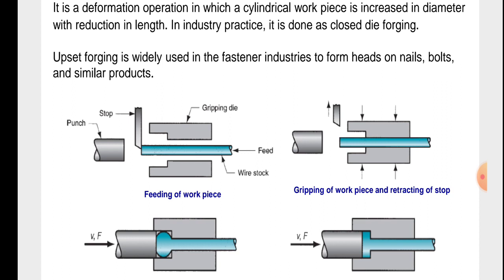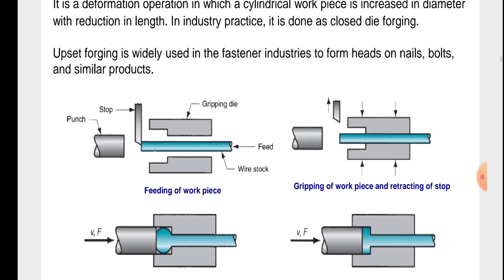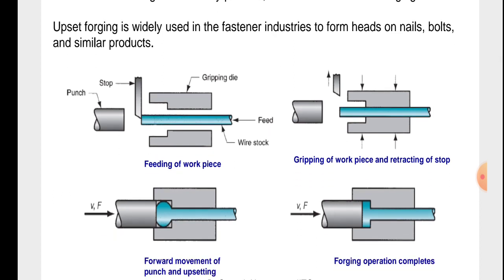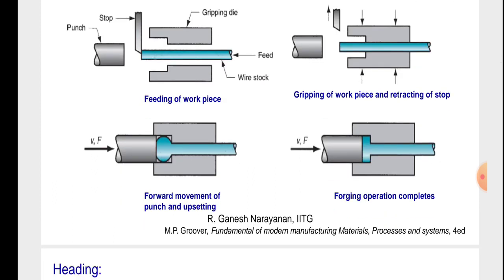The figure shows the punch, stop, gripping die, feed, and wire stroke. The process steps are: first, feeding the workpiece; second, gripping the workpiece and retracting the stop; third, forward movement of the punch and upsetting; and fourth, the forging operation completes.